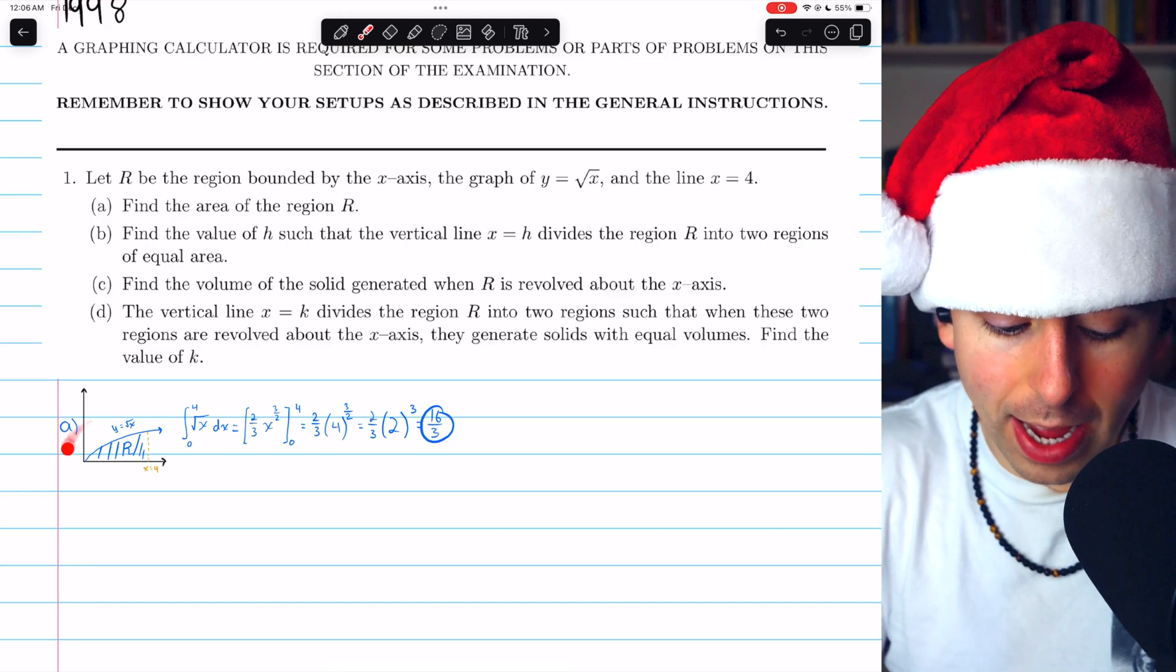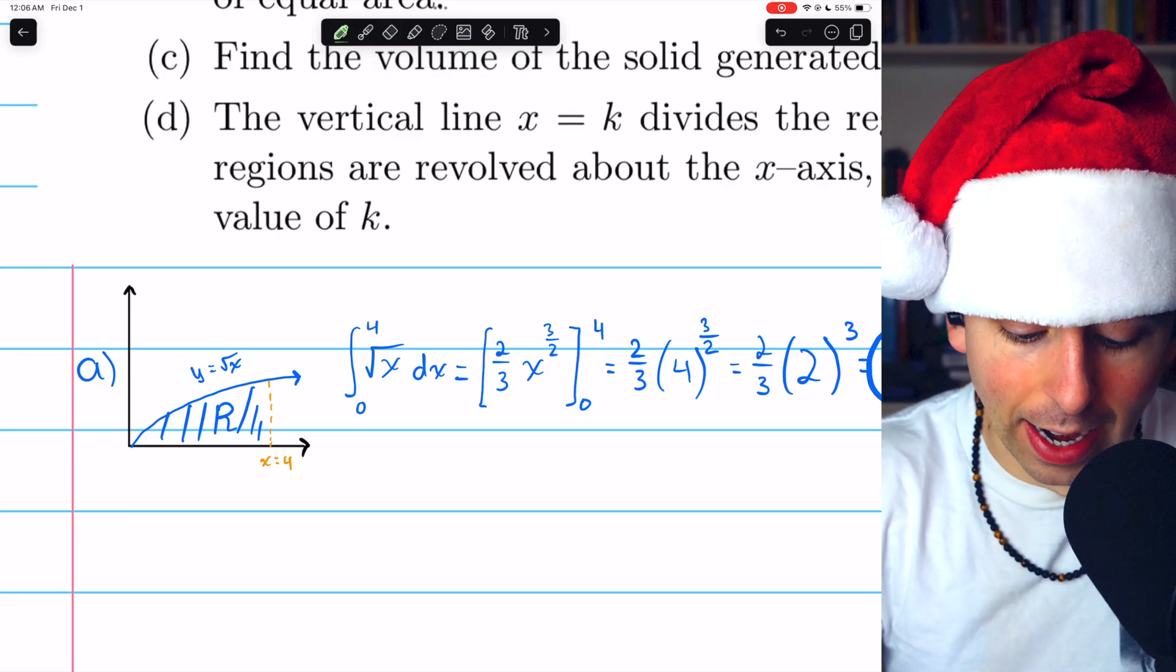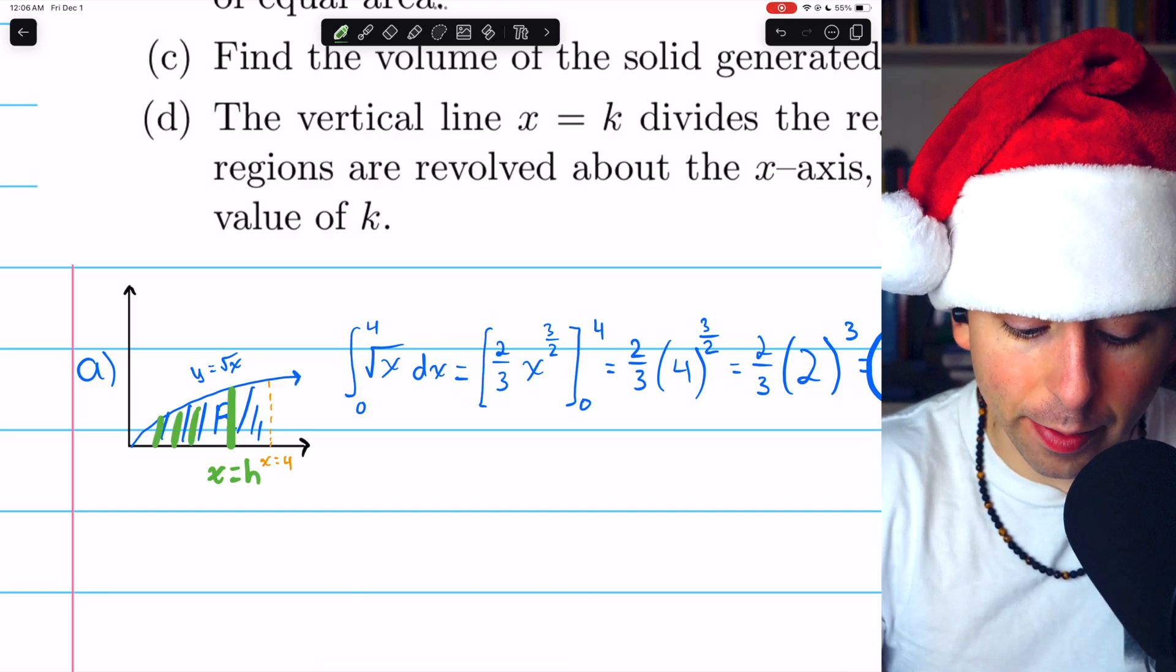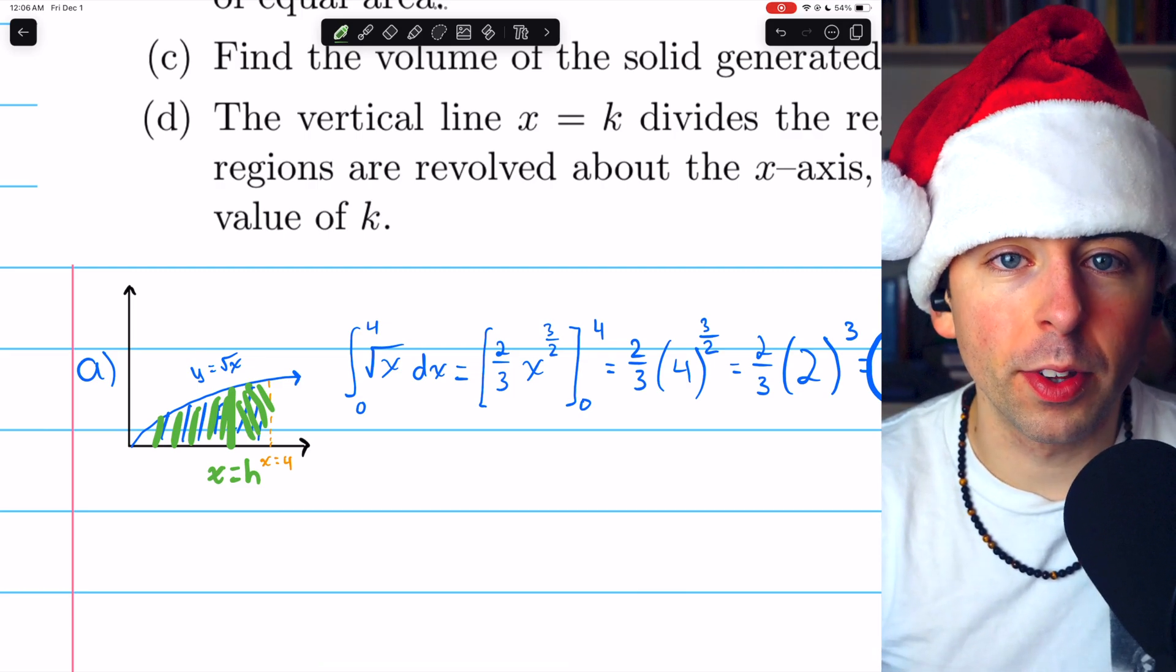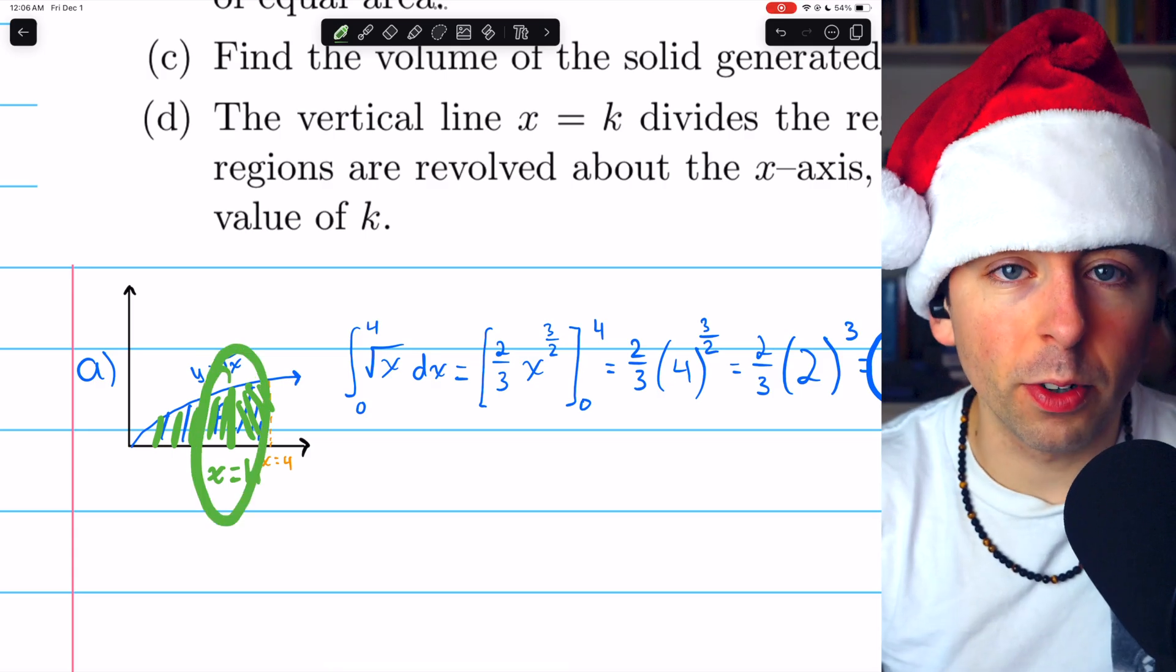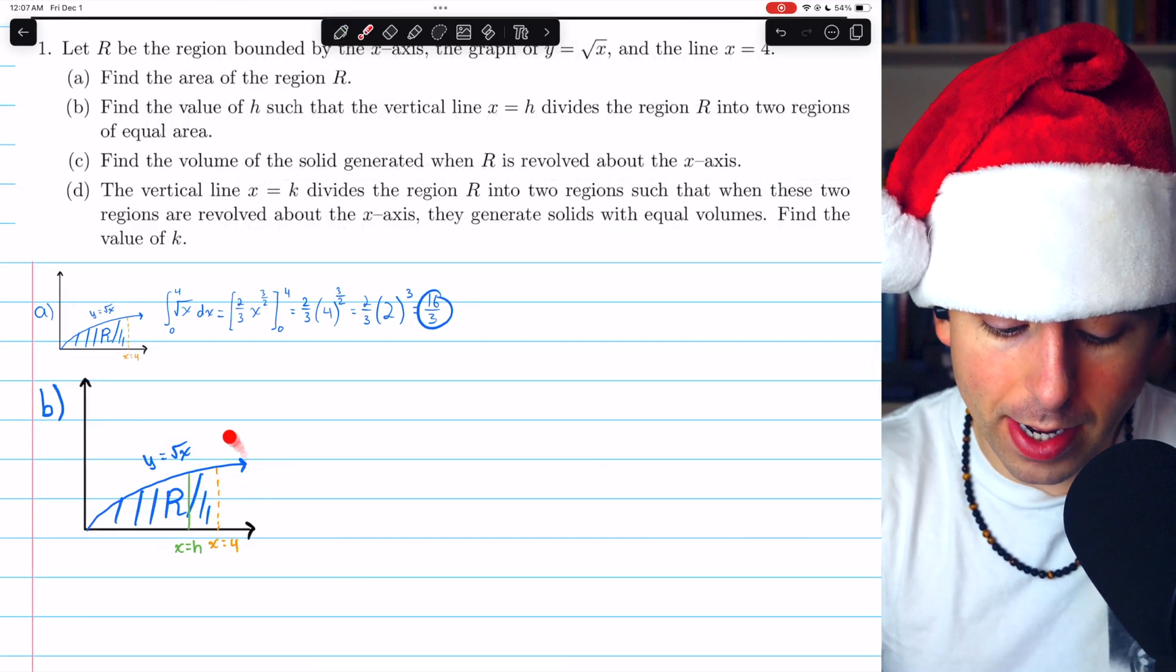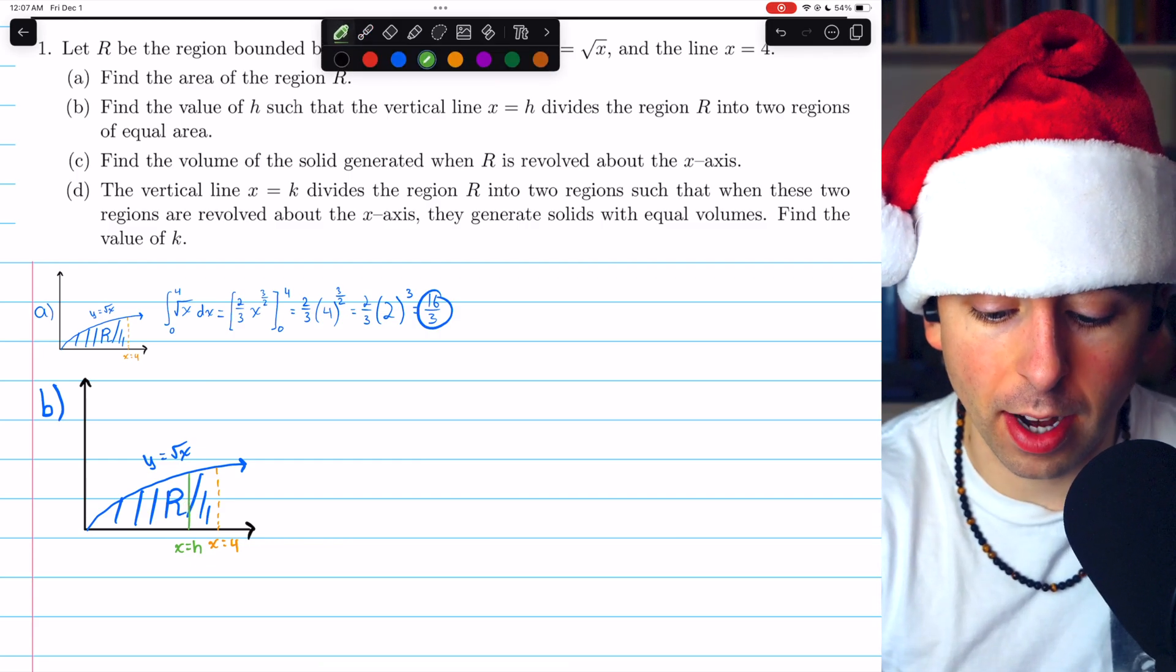So this sketch that we had before is still useful. But what we're looking for now is what line X equals H would we have to draw so that the area to the left is the same as the area to the right. So we'll have to set up an integral for the area on the left and an integral for the area on the right. And then we can solve that for the unknown, which is where does this vertical line have to be to make these two regions equal. So I've just copied the picture and made it a little bigger. There is our line, X equals H. We're not sure exactly where it has to be. We're just putting it somewhere on the picture to help us set up our integrals.